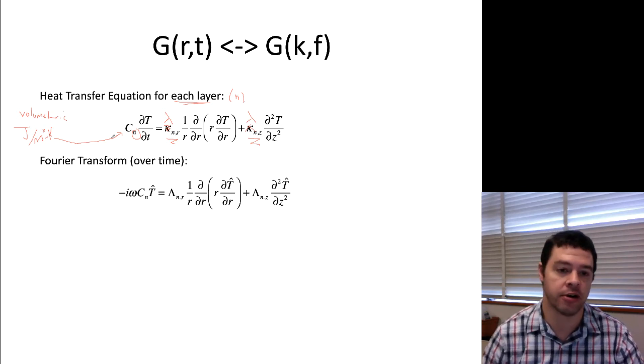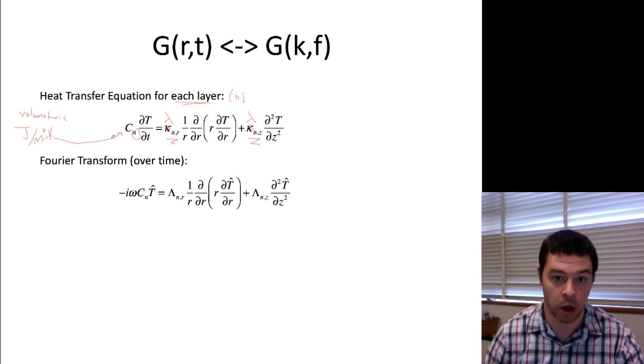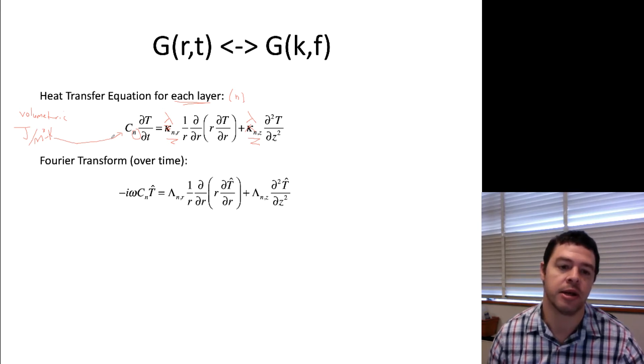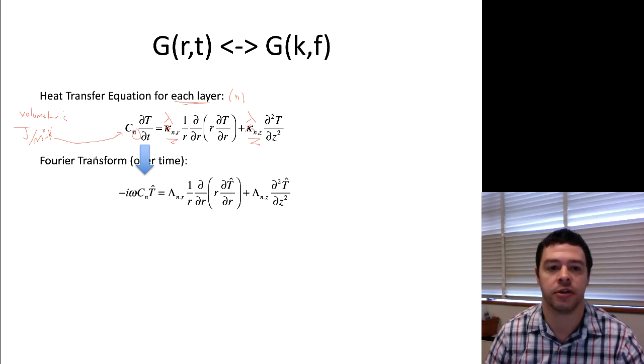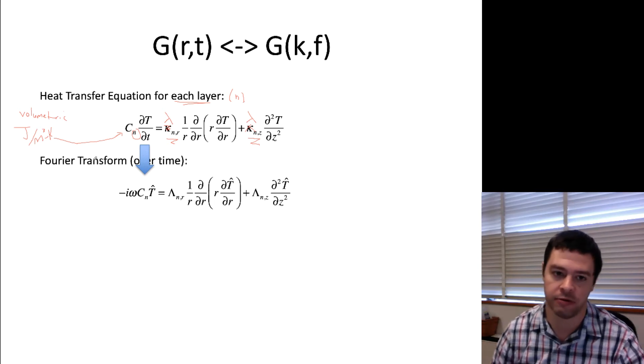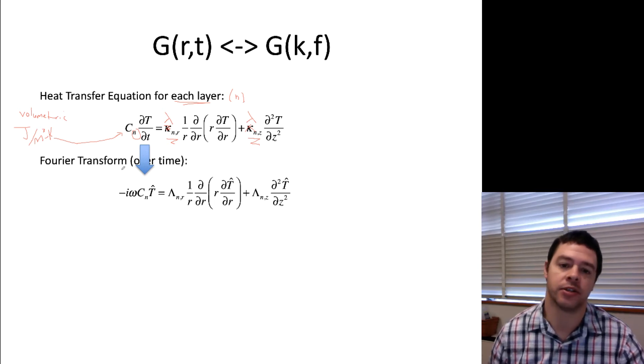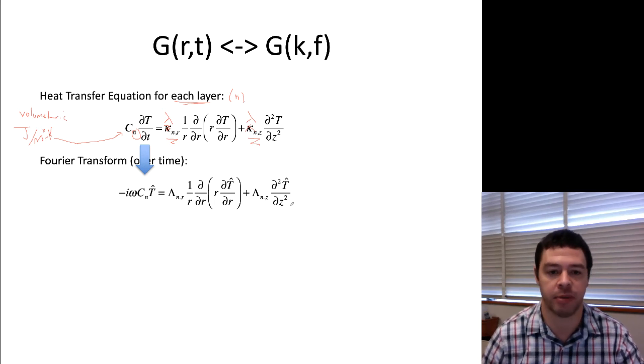Okay, so all I'm going to do from there is I'm going to first take the Fourier transform, and then I'll take the Hankel transform of that equation. So it turns out that when you take the Fourier transform of a time derivative, all it does is pop out a factor of minus i omega every time you see the derivative. So the d temperature, d time, becomes minus i omega times the Fourier transform of the temperature. And since the other things don't have any time derivatives, the Fourier transform just sort of pops inside all of the space derivatives.